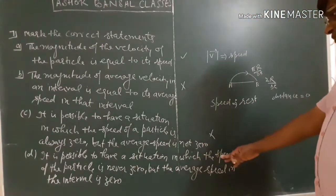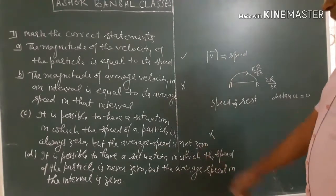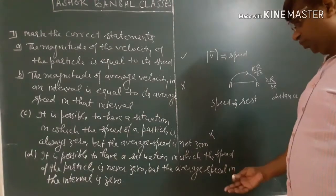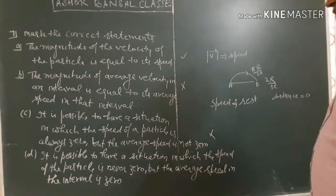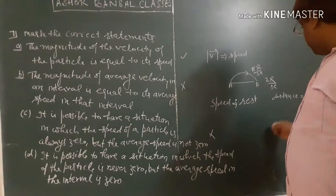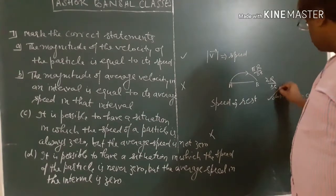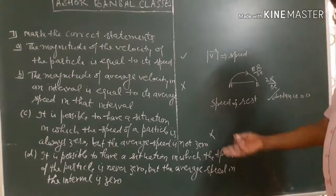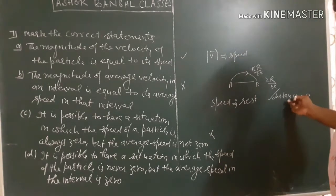It is possible to have a situation where the speed of the particle is not zero. If the speed is zero, the average speed is zero.